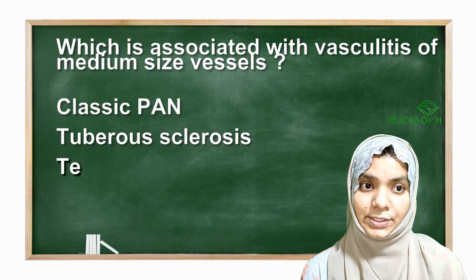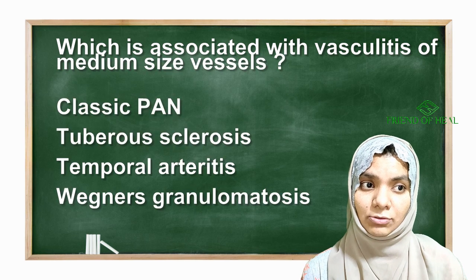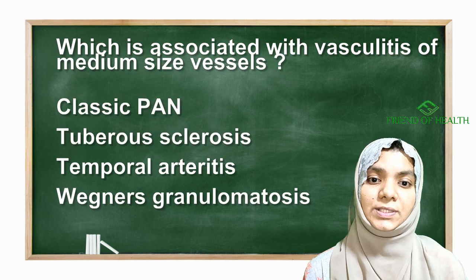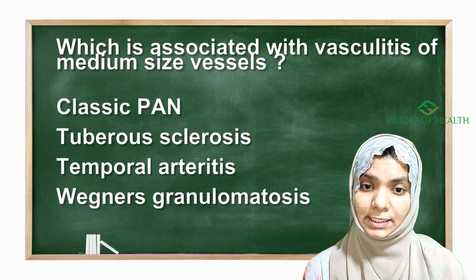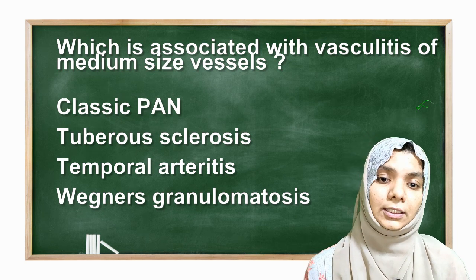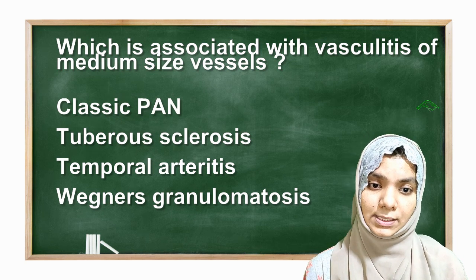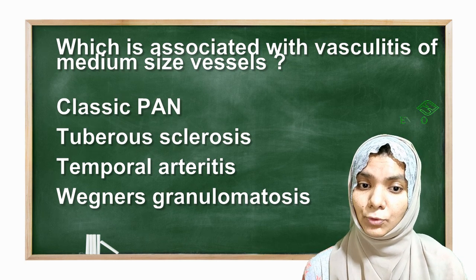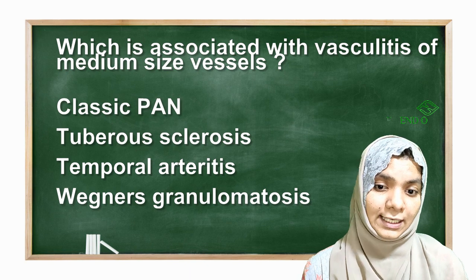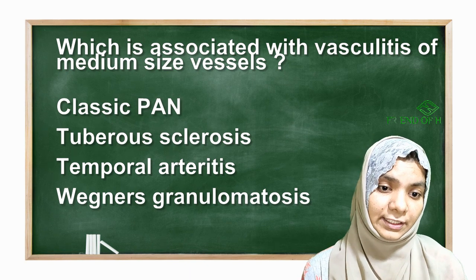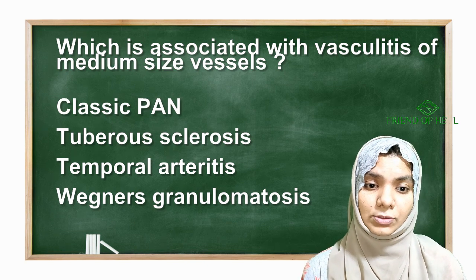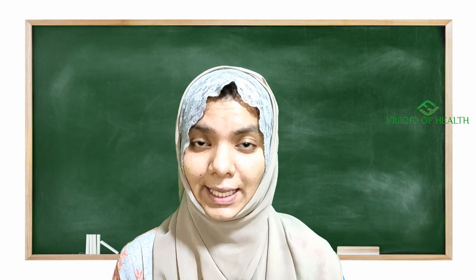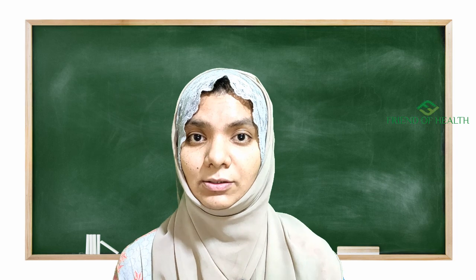Now the next question: which of the following is associated with vasculitis of medium-sized vessels? Option A is classic polyarteritis nodosa, B is tuberous sclerosis, C is temporal arteritis, and D is Wegener's granulomatosis. Now let us see the classification of vasculitis.